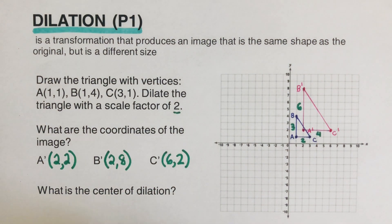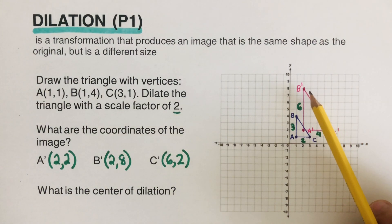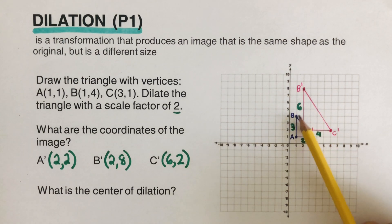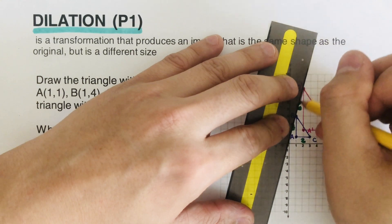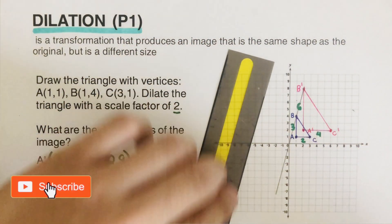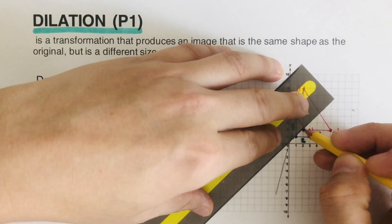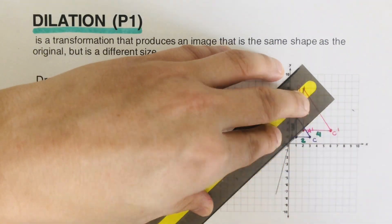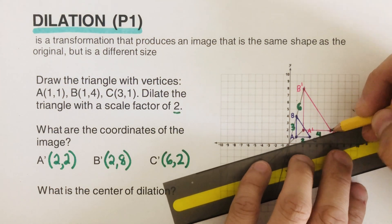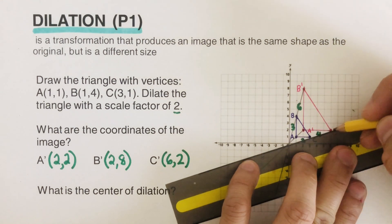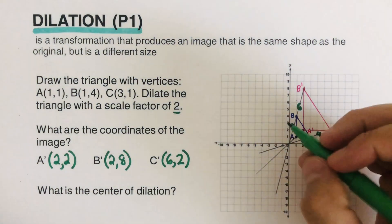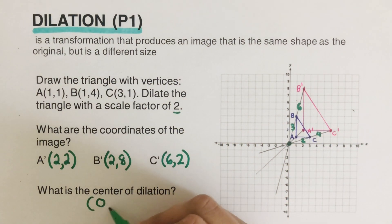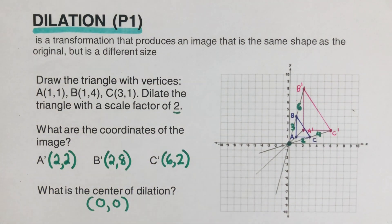Now we find the center of dilation. We connect the corresponding vertices: B to B prime, A to A prime, and C to C prime. The intersection of these three lines is the center of dilation. From here we can conclude that the center of dilation is located at the origin, (0,0).